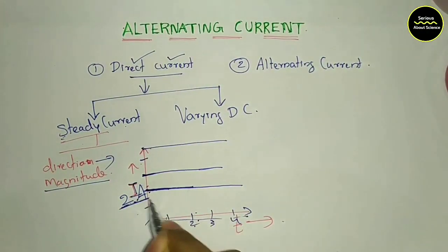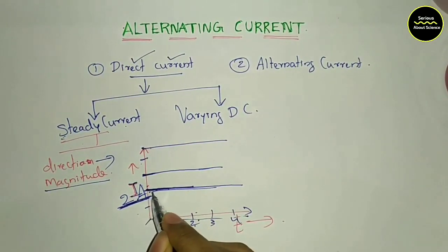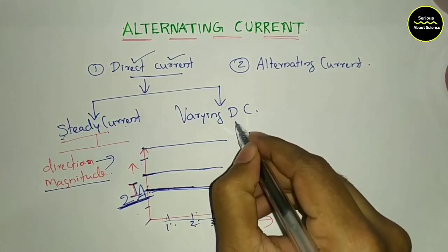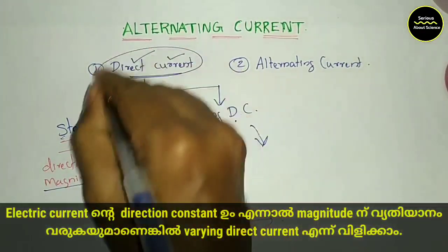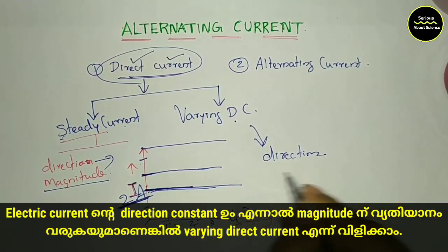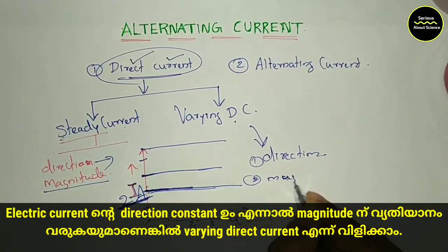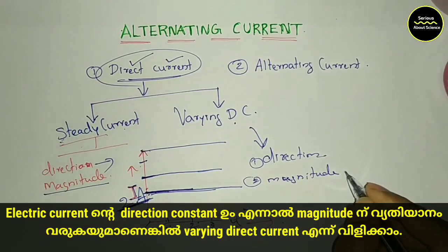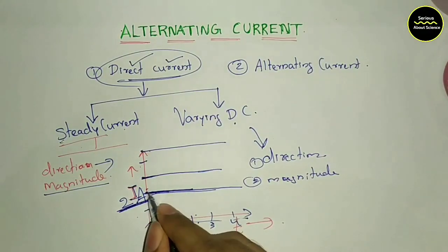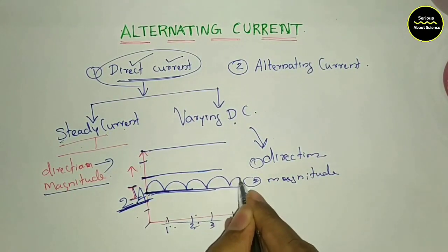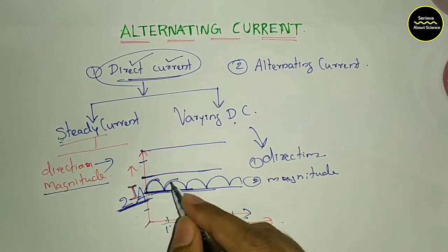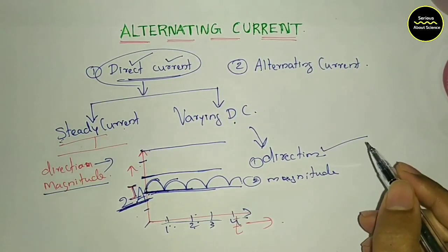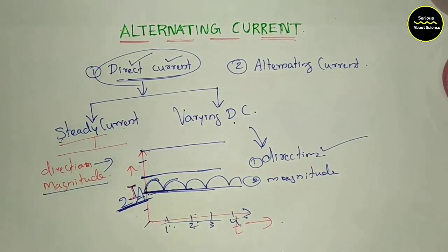That is the third direct current: steady current. The second type is varying DC. The direction is constant, but the magnitude changes — 2A is not the same at every point. There is a fluctuation. Varying DC is the type of DC whose value or magnitude always changes with time, but direction remains constant.